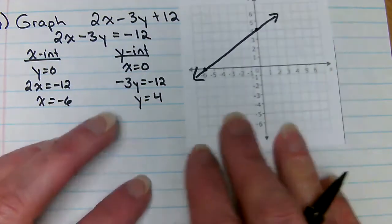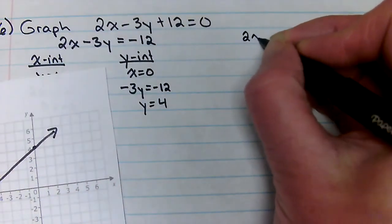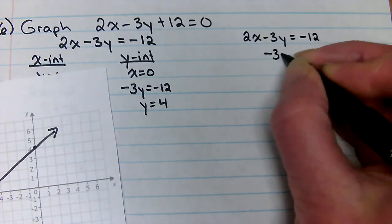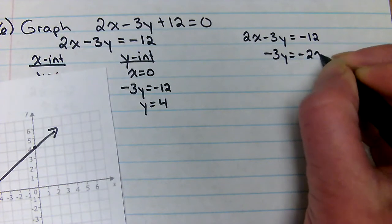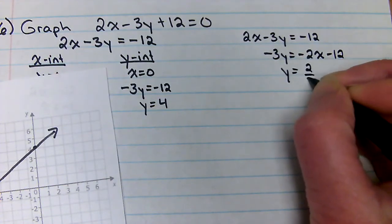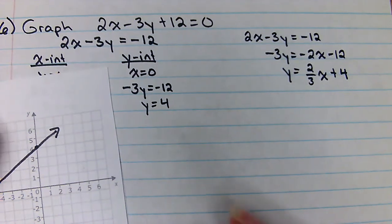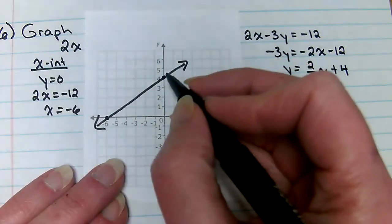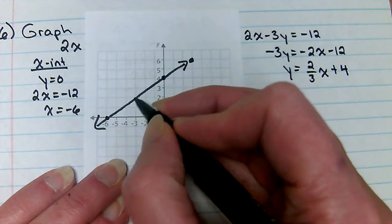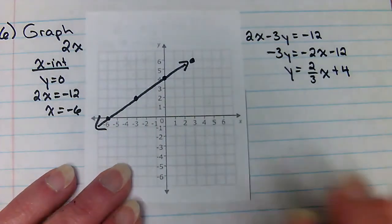Now, could you have also solved for y? Well, yeah. So I got y equals 2 3rds x plus four. Y-intercepts at four, up two over three, back down two, back three. It works, whichever way you do it.